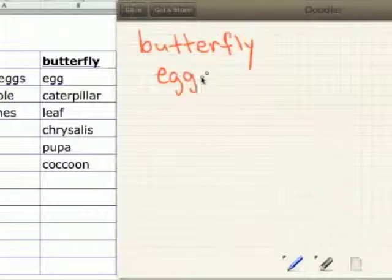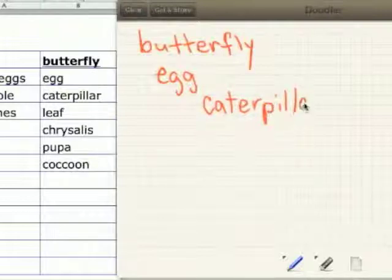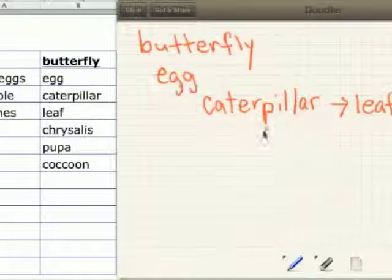The butterfly lays eggs. It all starts with the egg. The egg becomes a caterpillar. C-A-T-E-R-P-I-L-L-A-R. Caterpillar. The caterpillar just eats and eats and eats. What does he eat? He eats leaves. A leaf.